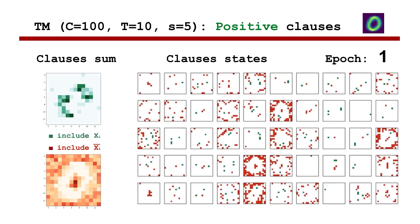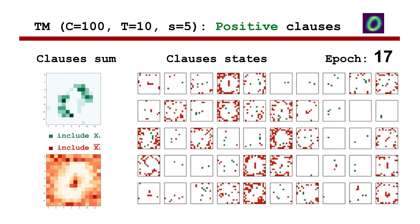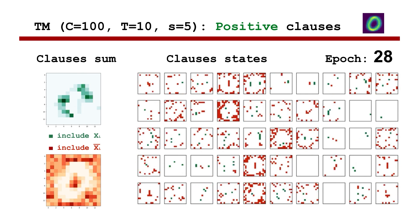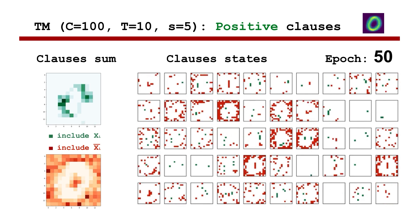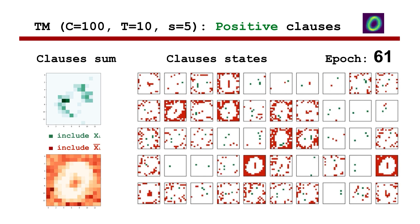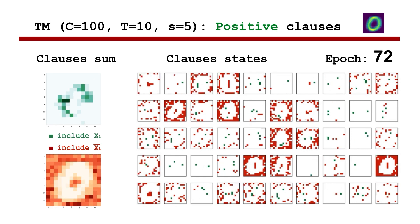Each positive clause, for example of class zero, captures common features of a group of class samples from the data set. Green pixels correspond to features that must be true. Red pixels mean that the corresponding features in the input data sample must be false. White means that the particular feature is excluded from the clause, because its value is indifferent to the class.